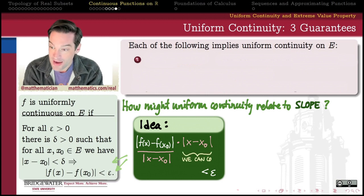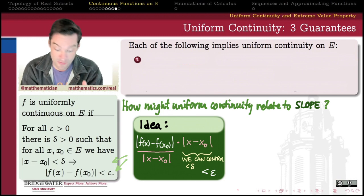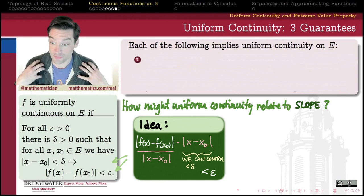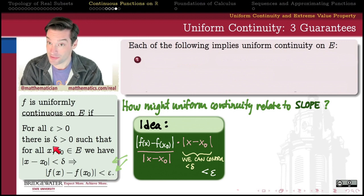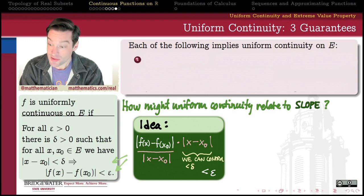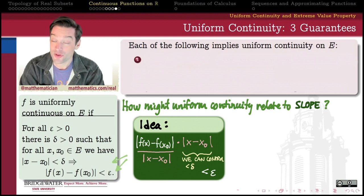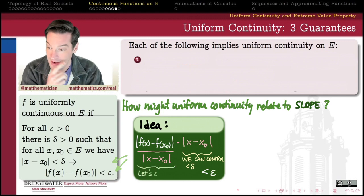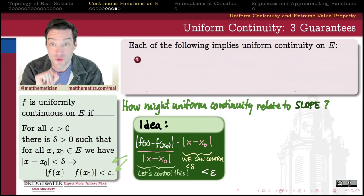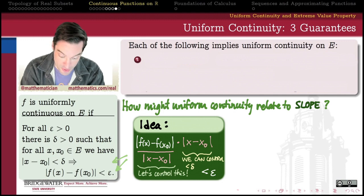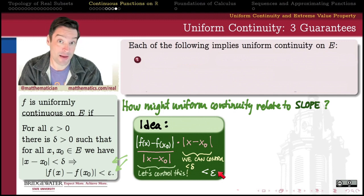Looking at these two factors, we realize that the distance between x and x₀ is something we have control over, because we're the ones picking delta in response to epsilon. Delta is the upper bound on the distance between x and x₀, so we control that factor. The one piece we don't necessarily control is the secant-line slope. So if, for some reason, we can control that slope — keep it bounded — then we can control the entire product and make it less than epsilon.